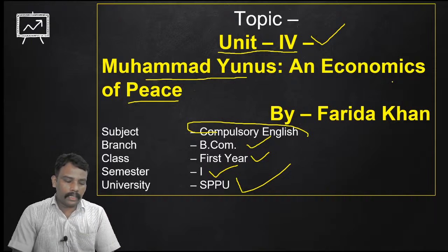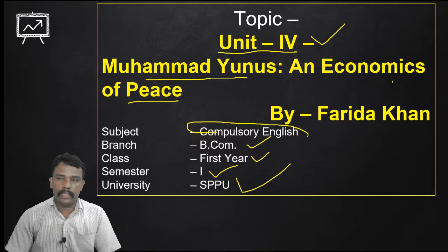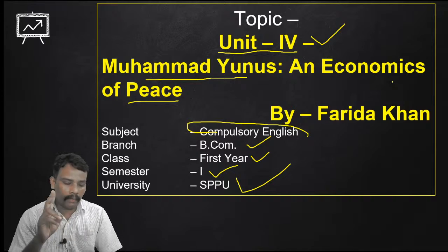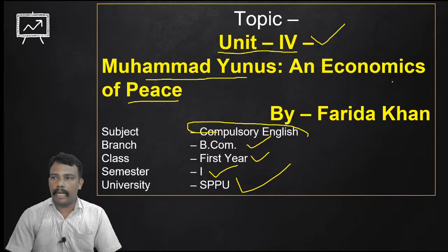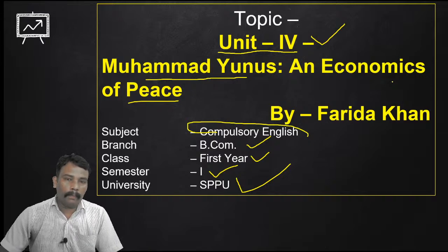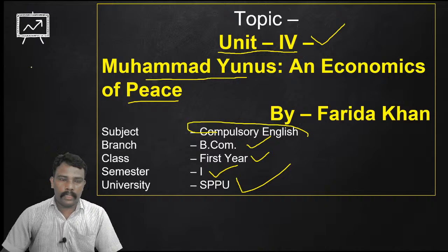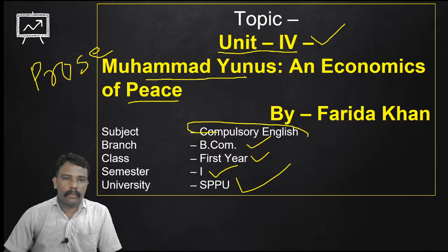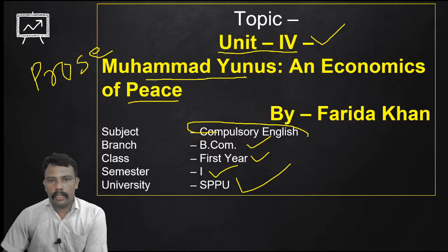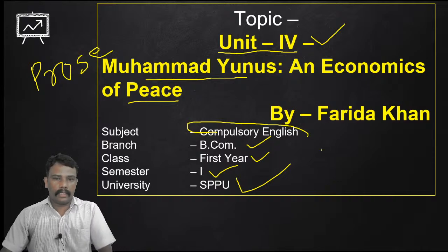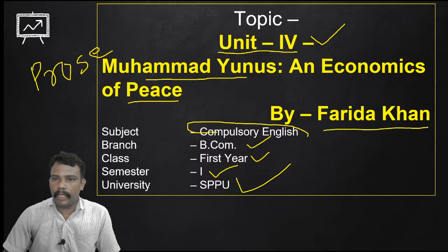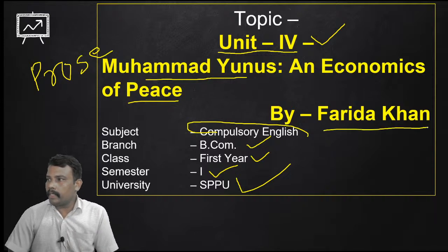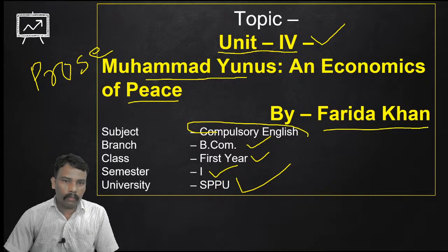There are total, in first semester, three sections. First is prose section, second one is poetry section, and third one is communication and life skills. From prose section, I am going to discuss Unit Number 4, that is Muhammad Yunus and Economics of Peace. This is an article written by Farida Khan. Do you know anything about Muhammad Yunus? Can anybody tell me who is Muhammad Yunus? Anyone can tell me in the chat box.